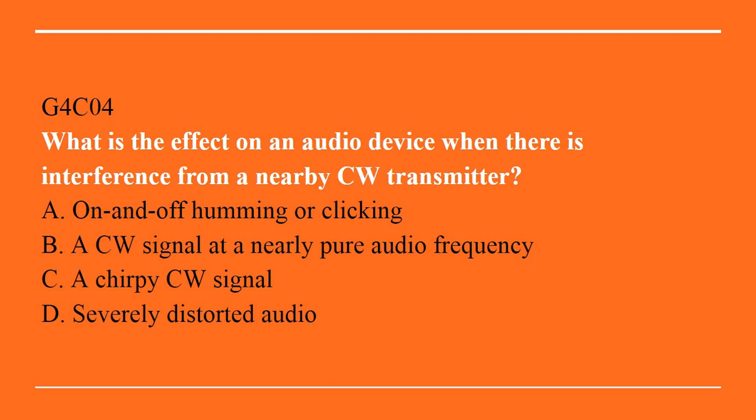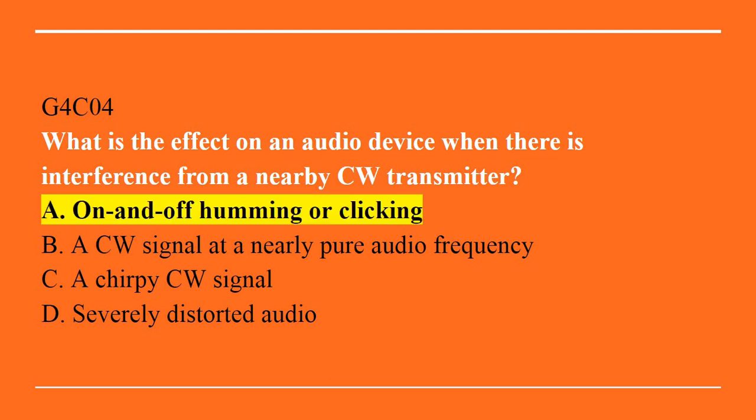G4C04: What is the effect on an audio device when there is interference from a nearby CW transmitter? A. On and off humming or clicking. B. A CW signal at nearly pure audio frequency. C. A chirpy CW signal. Or D. Severely distorted audio. The correct answer is A. On and off humming or clicking.